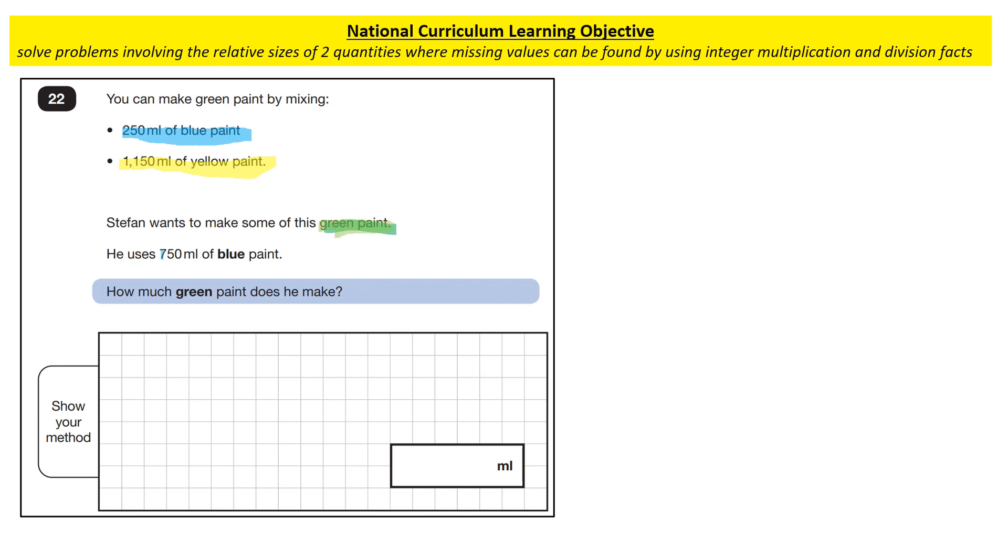We've then also got Stefan uses 750 milliliters of blue paint. Now what I always do to start is I write down the original ratio. So the original ratio is you can make green paint by mixing blue, we use colons to separate, and we've got yellow. Now you could use colon and then green. I'm going to use an arrow, could be an equal sign, to show that I've got some parts blue, some parts yellow, and that makes my green paint. Now I'm going to write in the units: 250, you could write milliliters as well if you wanted to, and 1,150.